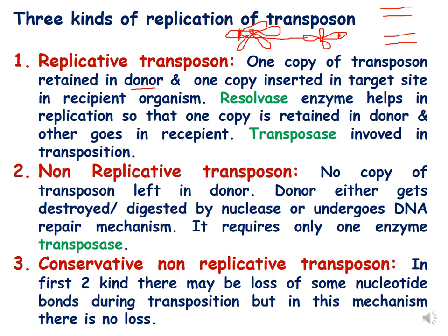There are three kinds of transposition mechanisms. In replicative transposition, one copy of the transposon is retained in the donor and one copy is inserted into the target site. Resolvase enzyme helps in replication so that one copy is retained in the donor while the other goes to the recipient. Both resolvase and transposase enzymes are involved in replicative transposition.